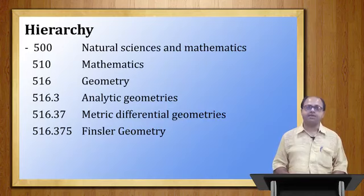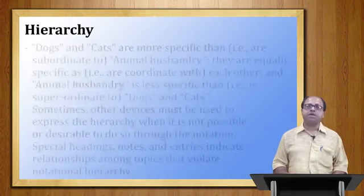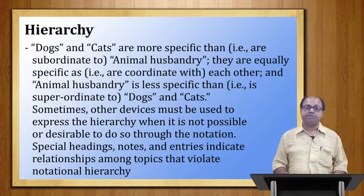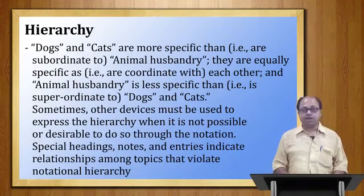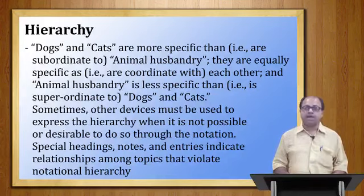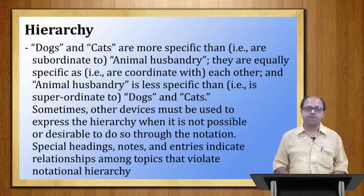So we have understood hierarchy. Dogs and Cats are more specific than, or subordinate to, Animal Husbandry. They are equally specific — that is, coordinate with each other — and Animal Husbandry is less specific, that is, superordinate to Dogs and Cats. Sometimes other devices must be used to express hierarchy when it is not possible or desirable to do so through notation. Special headings, notes, and entries indicate relationships among topics that violate notational hierarchy.